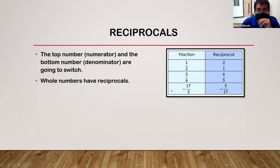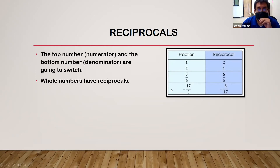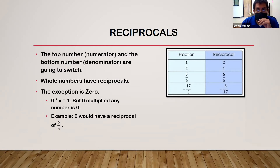Whole numbers also have reciprocals. The exception is zero, because zero times any number would have to equal one — but any number multiplied by zero gives zero. So zero would have to have a reciprocal of zero over a number, and you can't divide by zero; it gives an undefined term.